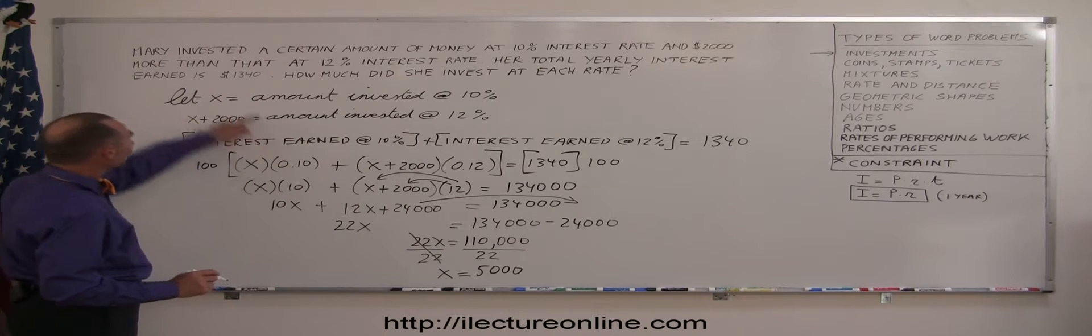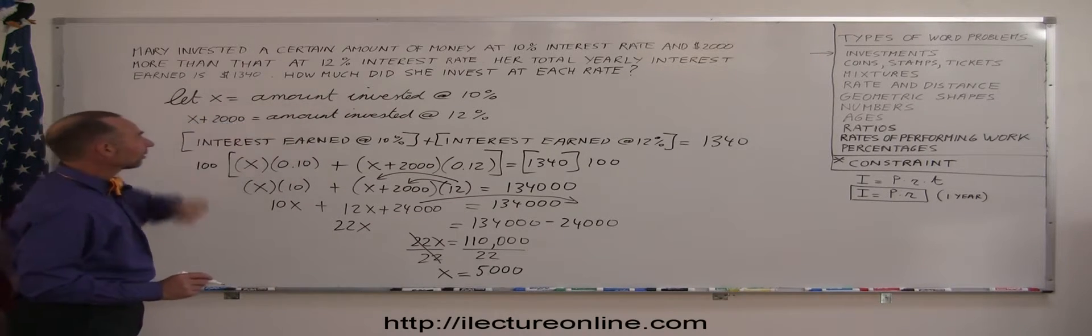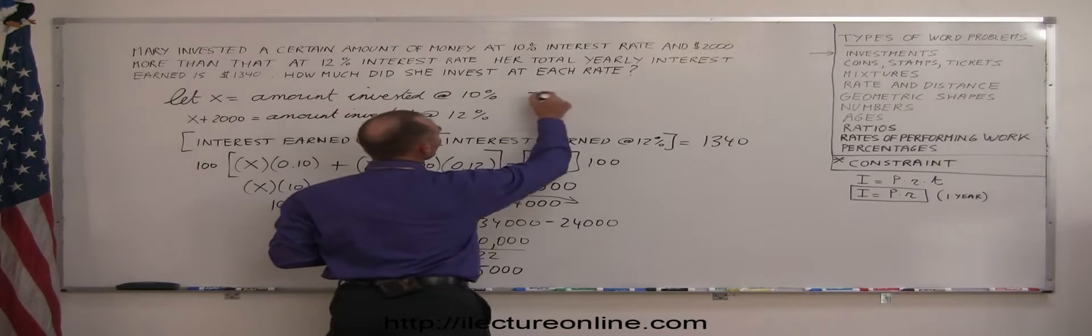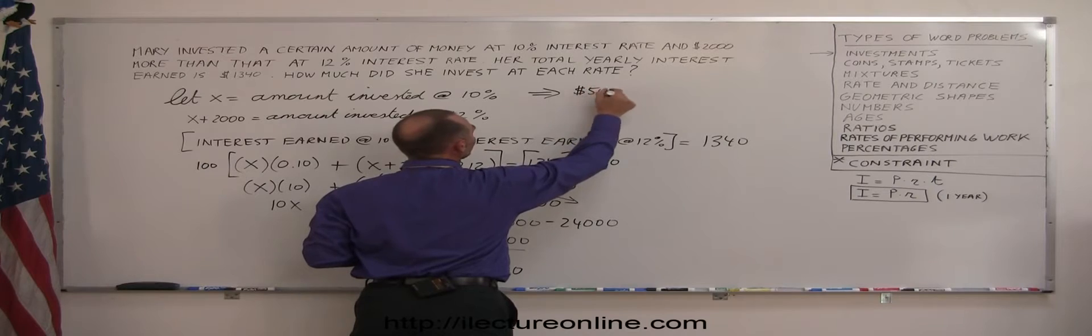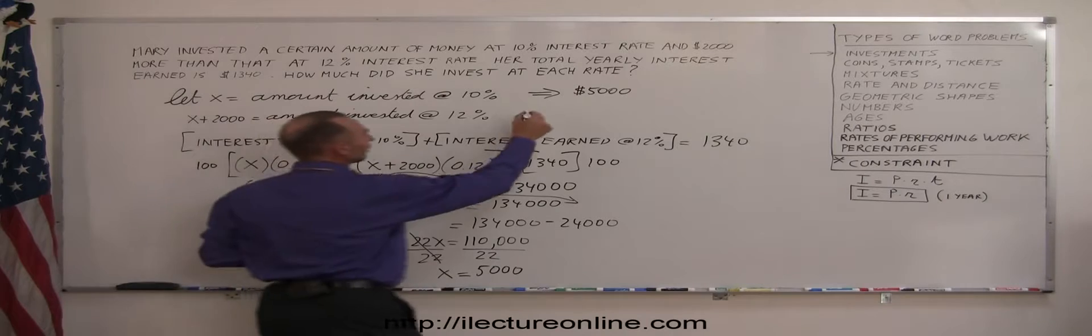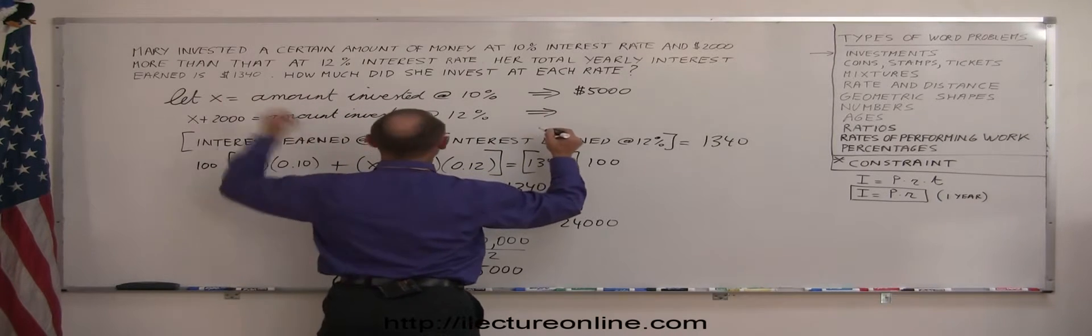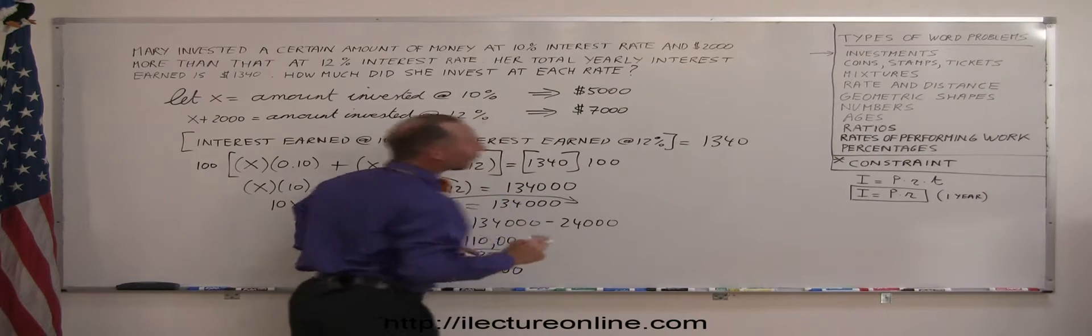Going back to what I defined, if x is the amount invested at 10%, that means x is $5,000. And then if Mary invested $2,000 more at 12%, that means she invested $7,000 at 12%.